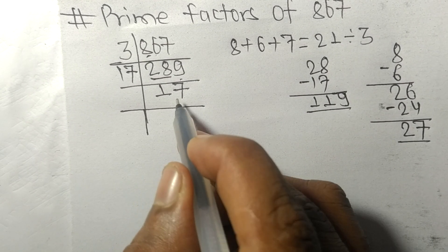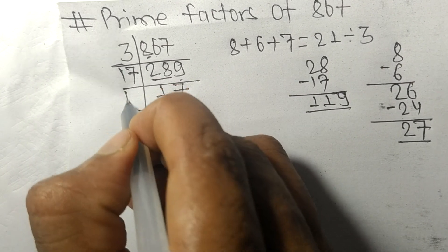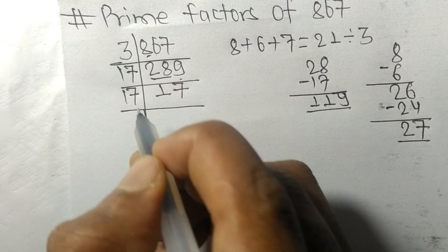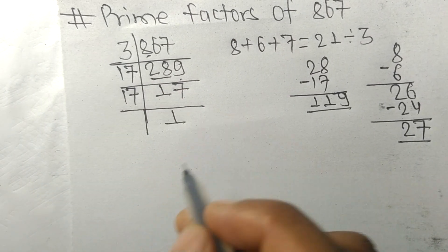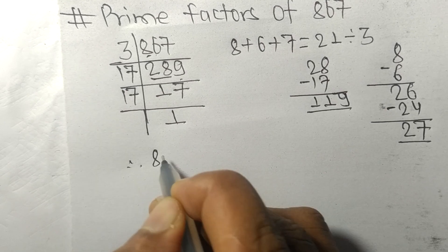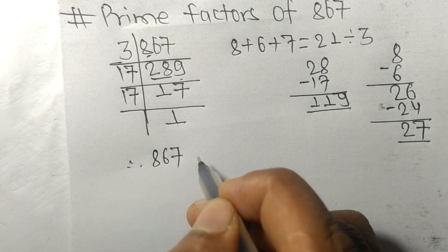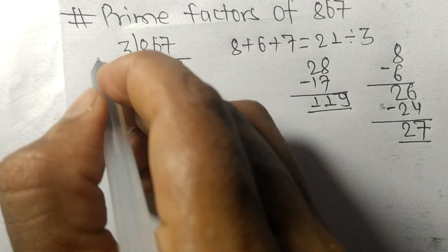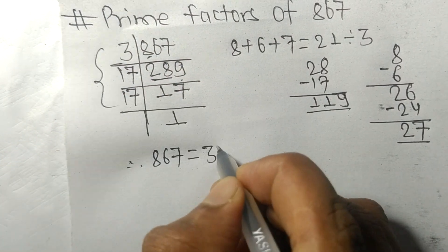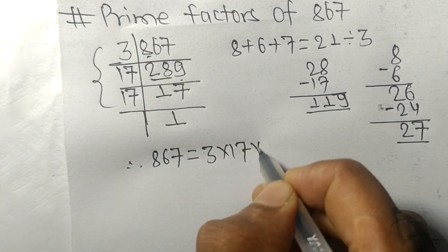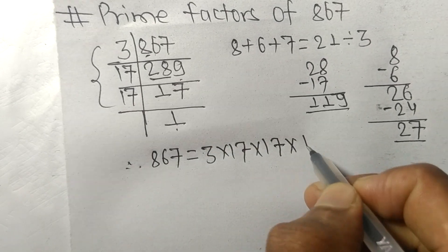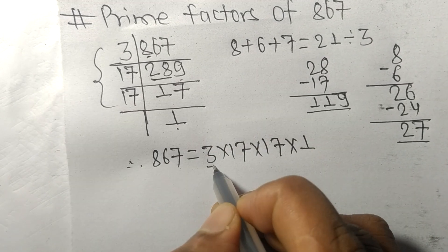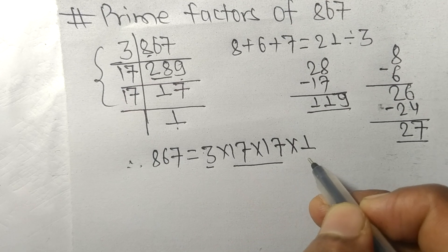Therefore, 867 equals 3 times 17 times 17 times 1. So 3, 17, and 17 are the prime factors of 867.